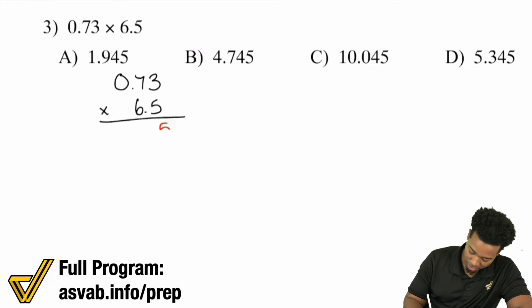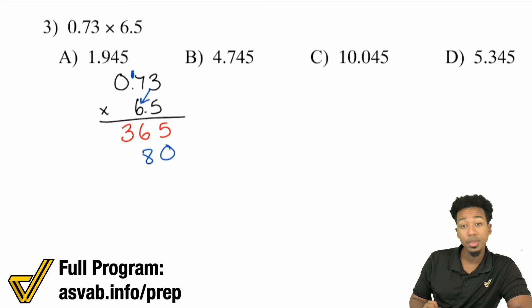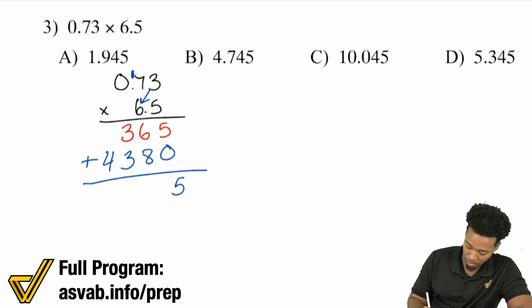3 times 5 is 15, carry the 1. 7 times 5 is 35, carry the 1 is 36. Next, place a 0 and keep going. 3 times 6 is 18, carry the 1. 7 times 6 is 42, carry the 1 is 43. Add these back together: 5, 14 carry the 1, 1 plus 3 is 4 plus 3 is 7, and then the 4 right there.